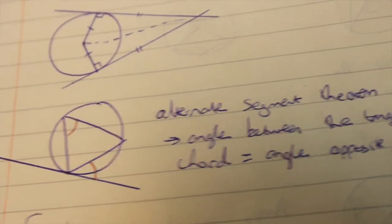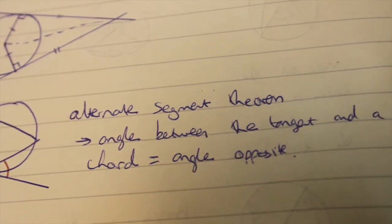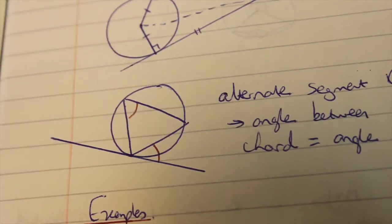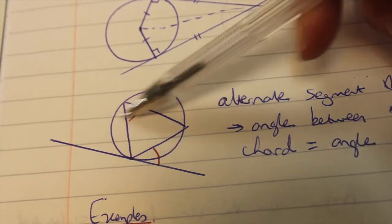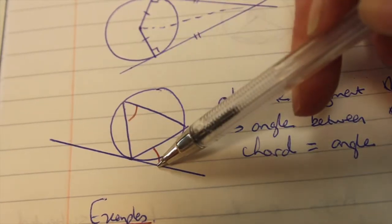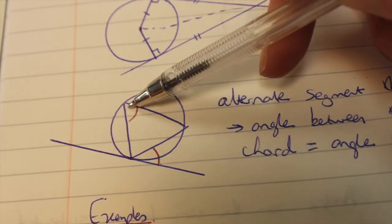Now the alternate segment theorem. The angle between the tangent and a chord equals the angle opposite. Basically put that into easier terms to understand. You have a triangle and a tangent. The outside angle equals the opposite inside angle.